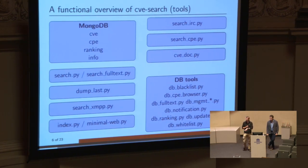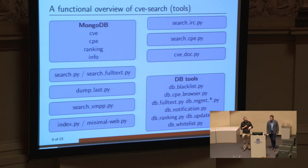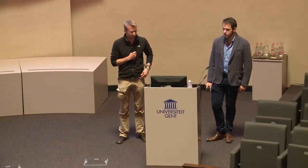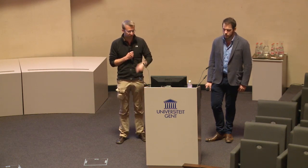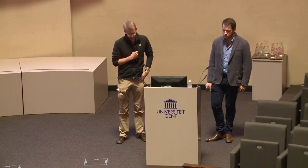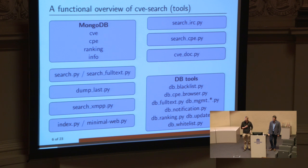Now that you have all the data in the database, you want to do something with it. We have a range of tools: the most obvious is searching the MongoDB database for specific things. You can dump the latest security advisories, classify them according to your internal classification, use a Jabber/XMPP bot to query and search directly, or use the same for IRC. There are additional tools for dumping CVEs into AsciiDoc for PDF output — for corporate environments that want nice shiny PDFs. There are also back-end db tools for managing the database.